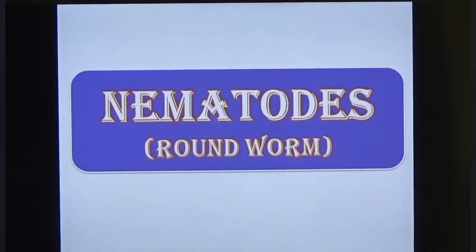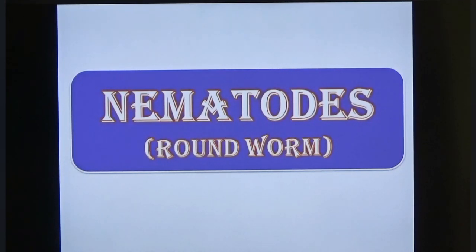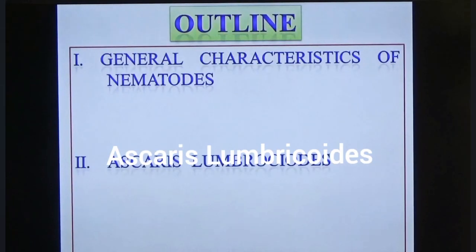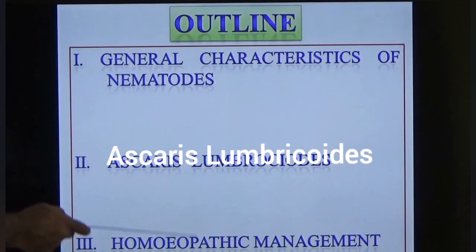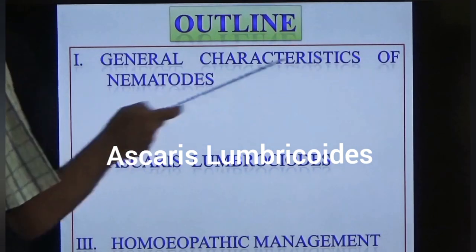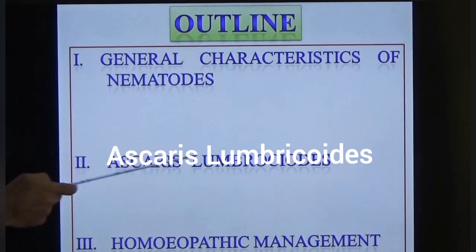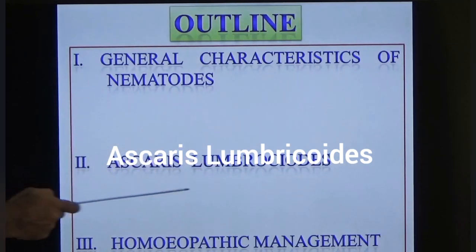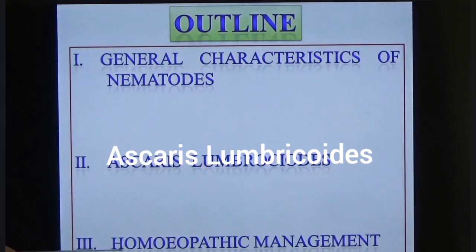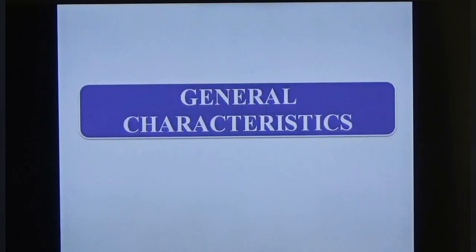Good morning everyone. Today's topic of discussion is about nematodes. As we know, helminths are divided into cestodes, trematodes, and nematodes. In the last few classes we discussed cestodes; today we will study the details about nematodes. The outline will cover: general introduction, general characteristics of nematodes — there are 12 characteristics — and we will discuss Ascaris lumbricoides and its homeopathic approach.